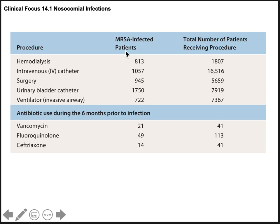MRSA infections are most common in people on dialysis, those with urinary catheters, and those with IV catheters. Antibiotic use in the last six months is much more likely to lead to a resistant strain — vancomycin, fluoroquinolones, ceftriaxone — any antibiotic use increases the likelihood of developing a resistant strain in your microbiota, making you more likely to get a resistant infection.